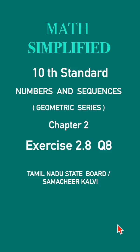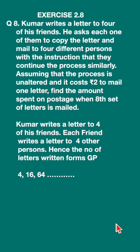Exercise 2.8, question 8. Click here for the full exercise. Kumar writes a letter to four of his friends. He asks each one of them to copy the letter and mail to four different persons.